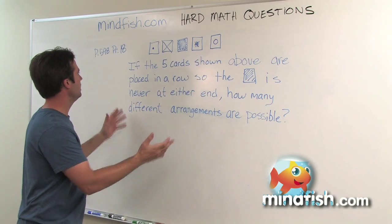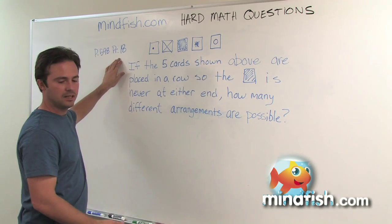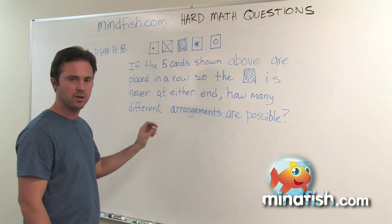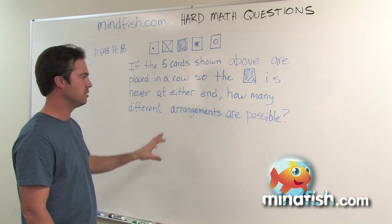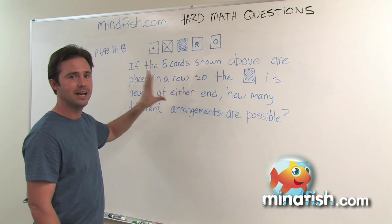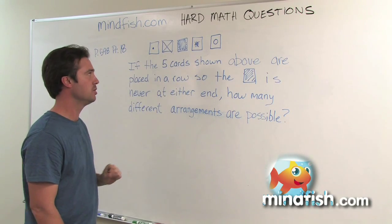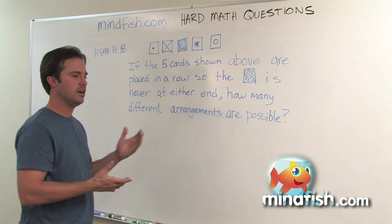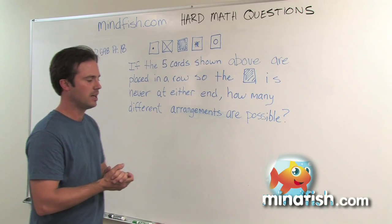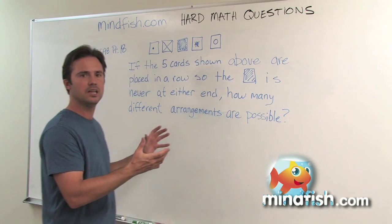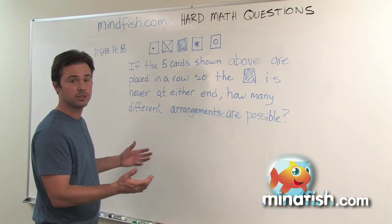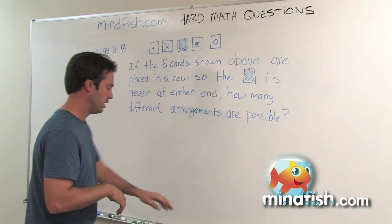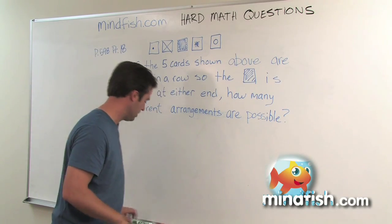So this question is problem 18 on page 598. It's the last question on the math section with the student-generated responses, so you have to come up with your own answer here, not pick one for multiple choice. It is a pattern question which I would put under probability — it's essentially a permutation question, but it's got a trick to it, and that's why it's a hard question.